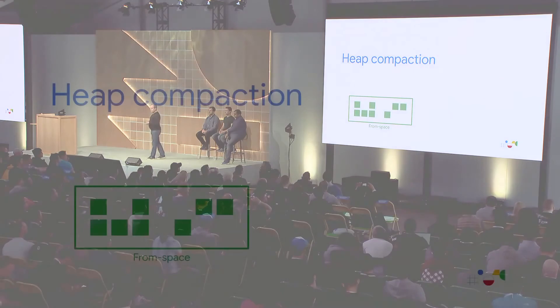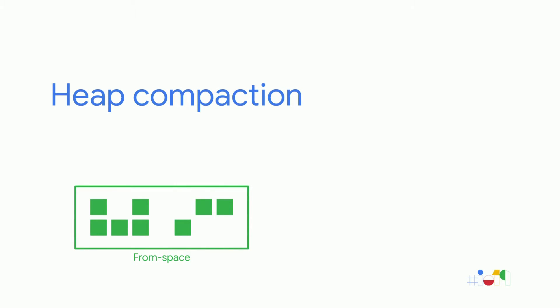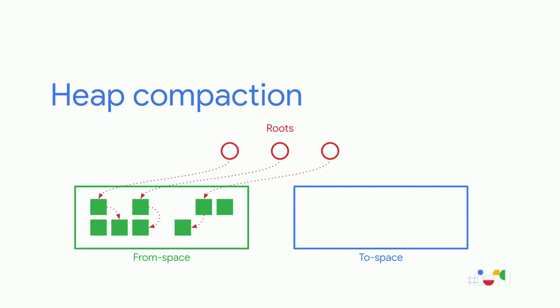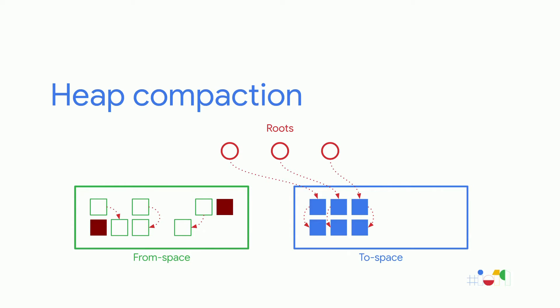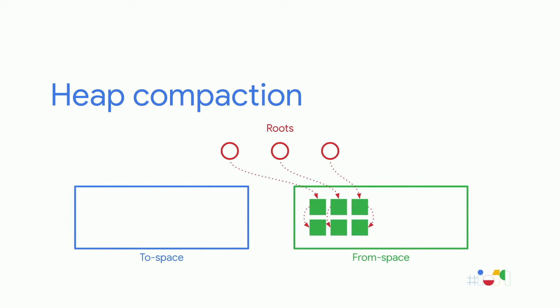A copying collector traditionally splits the managed heap into two spaces: a from-space containing currently allocated objects, and a to-space to which live objects are moved during garbage collection. During a GC cycle, the collector traces the heap, following root references to managed objects — for instance from a thread stack — and marks all reachable objects to compute the set of live objects. Reachable objects are copied to the to-space as they are marked, compacting the heap. At the end of the collection, unmoved objects are dead and reclaimed. Finally, the from-space and to-space are swapped, and new allocations happen in the new from-space.